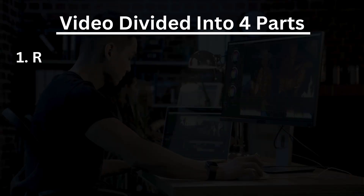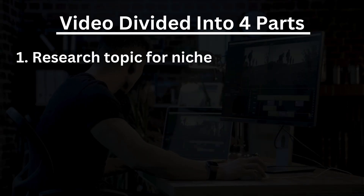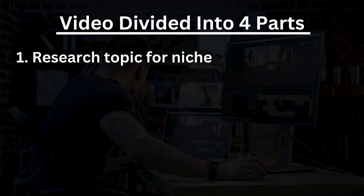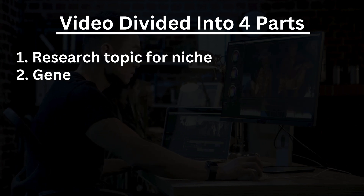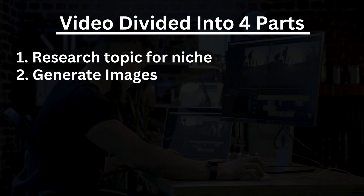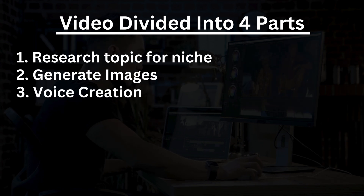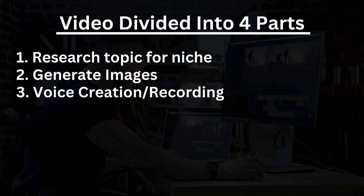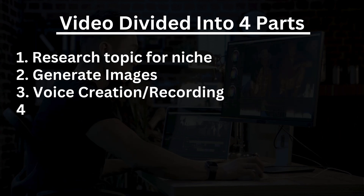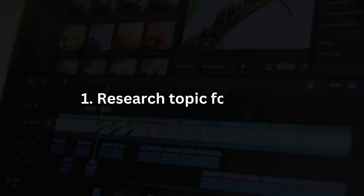The video is divided into four parts. First, research the topic you want your avatar to speak about. Second, learn how to generate realistic and consistent images for free. Third, discover how to record or use an AI voice for your video. Fourth, we will find out how to make our avatar speak. So let's start with the first part: research.